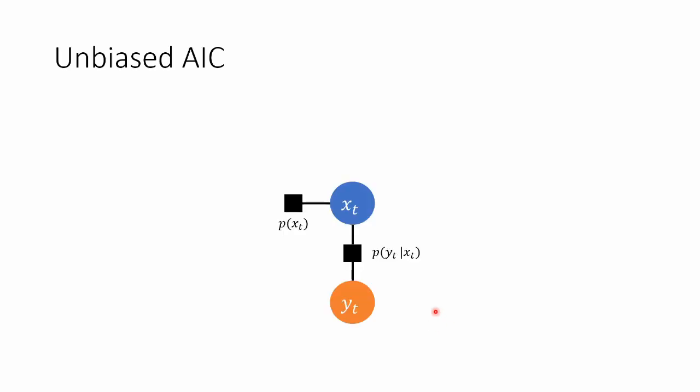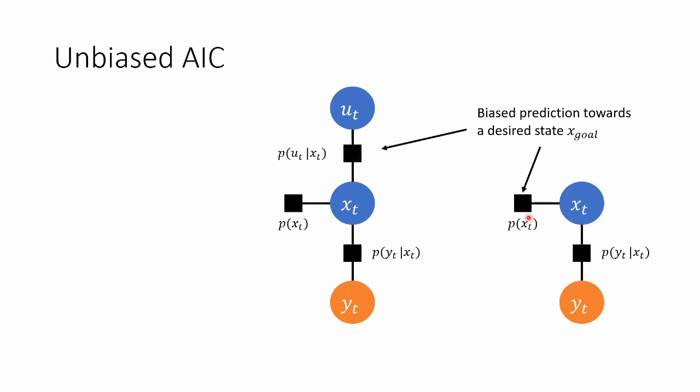So how do we overcome these? Well, with the Unbiased Active Inference controller. This is the previous controller we had. And now we simply add a control variable and we define this distribution p of u given x. And we put the bias here. We encode the bias towards the target in this block rather than the prior like we did before. So this simple change allows us to retain all the benefits but overcome the limitations we mentioned.